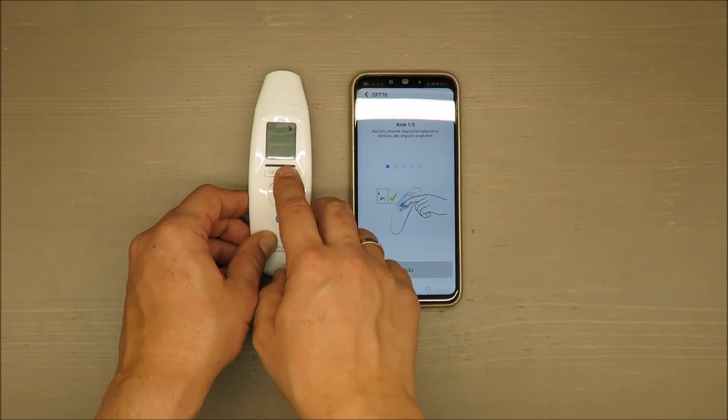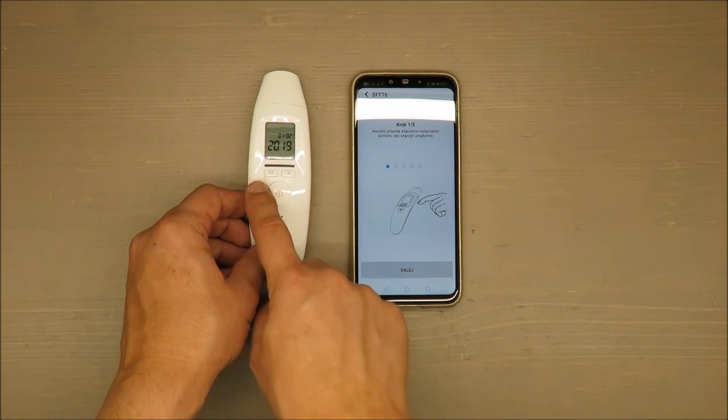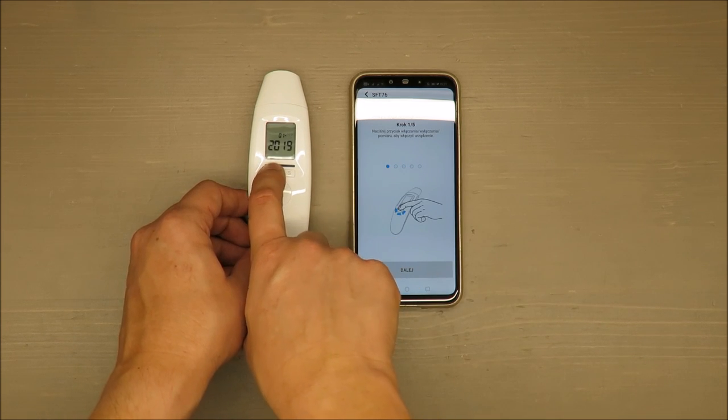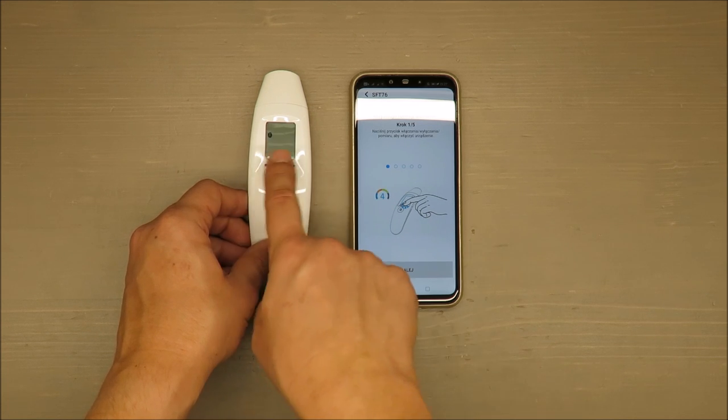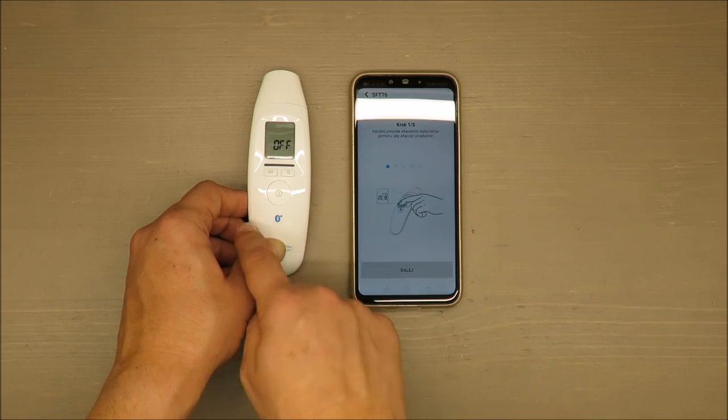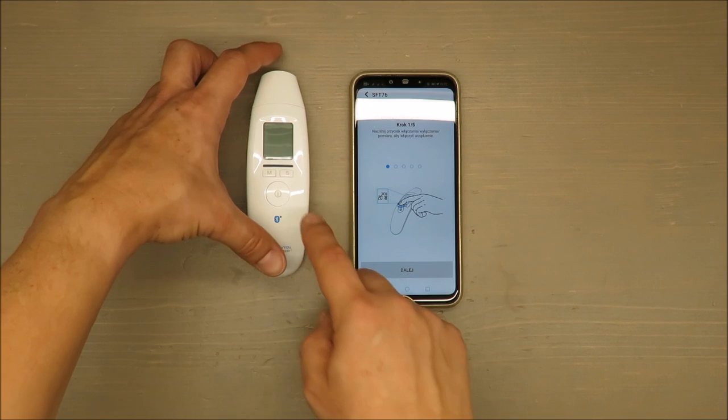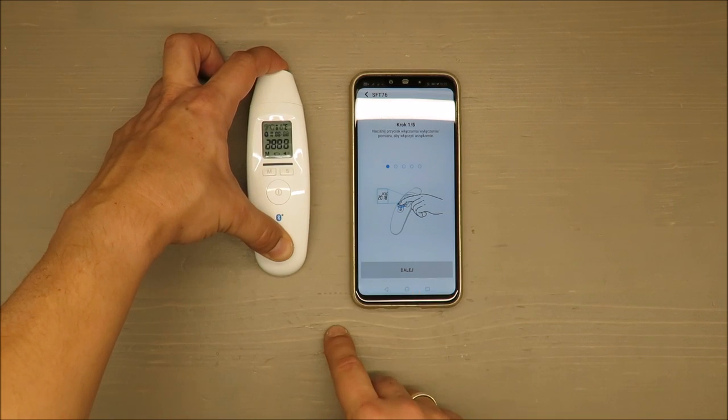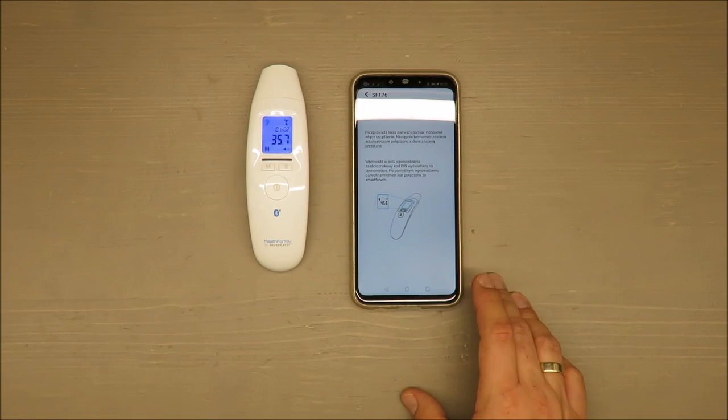Okay, Fahrenheit, no, I want to have Celsius. Next, 24 hours, that's fine. Date and hour, not really important for me at the moment. Bluetooth on/off, on. And now it's turning off.